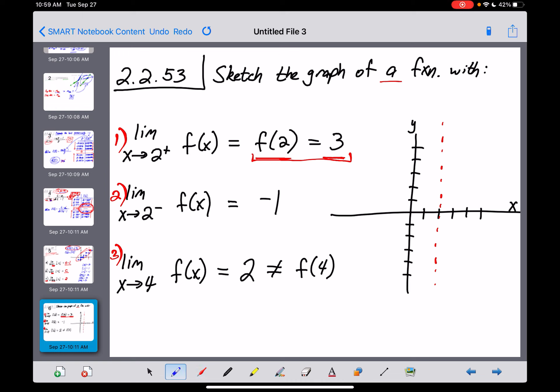No ifs, ands, or buts about it. All of us have to have a closed dot right there at the ordered pair (2, 3). And then incorporating with that, the limit as x approaches 2 from the right, so moving this way of that function, has to equal that same value right there.